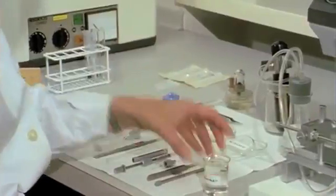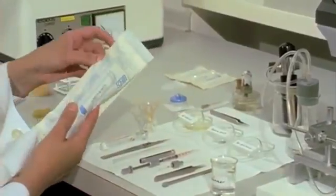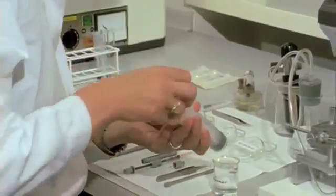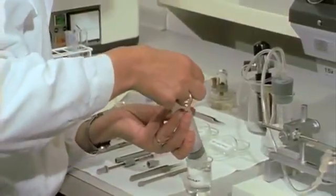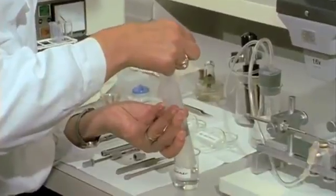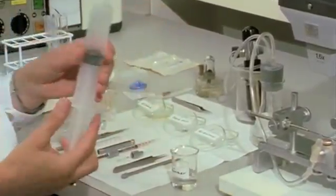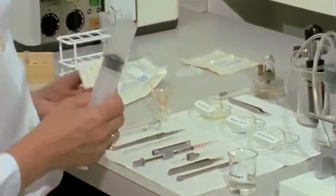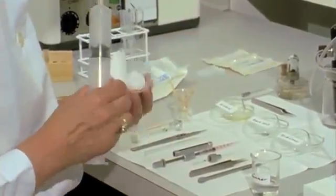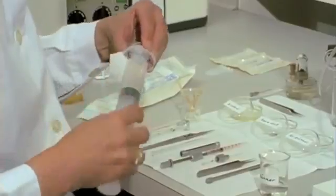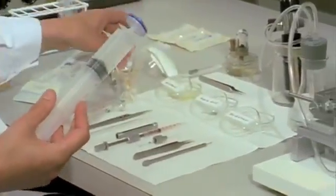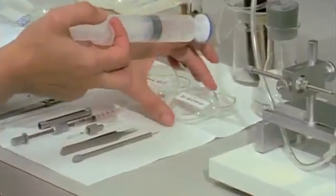In preparation for semen collection, a semen diluent—for example saline solution or, as here, Tris buffer—is drawn up. The liquid is sterilized by microfiltration. The pore diameter of the membrane is 0.2 microns.